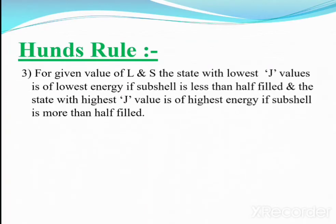Rule number three: for given values of L and S, the state with the lowest J value is of lowest energy if the sub-shell is less than half-filled, giving J = L − S. If the sub-shell is more than half-filled, the state with the highest J value is of lowest energy, giving J = L + S.